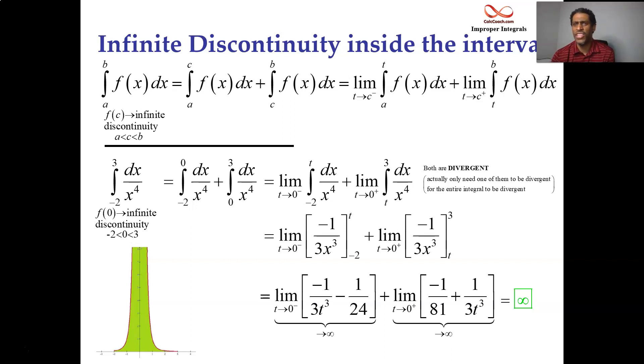That has infinite area. Each side is actually infinite. Zero to three on the right-hand side and negative two to zero. So, all right. One more example.